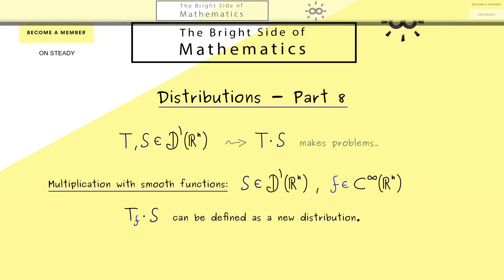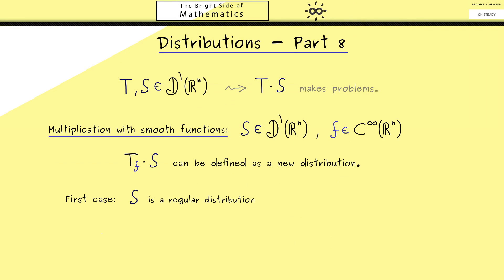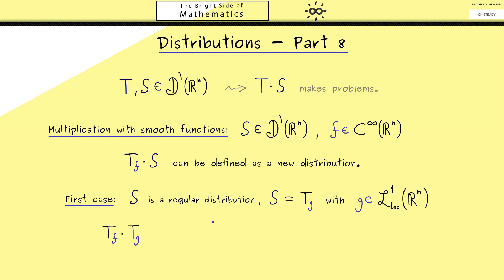The question is what is a meaningful definition for this. Maybe we should first discuss the case that s is given by a regular distribution, meaning s can be written as tg where the function g is locally integrable. Hence we first talk about the product tf times tg, and as often, we look at what happens when we put in a test function phi. In the spirit of the last video, this should be compatible with the product of the functions f and g — so this should be the same as the distribution t of f times g.